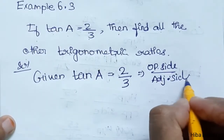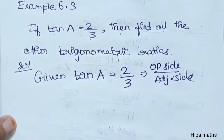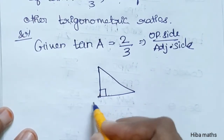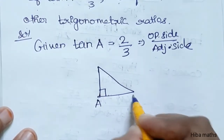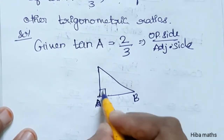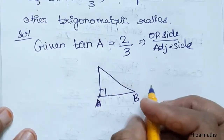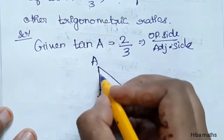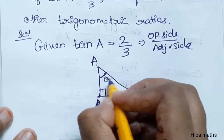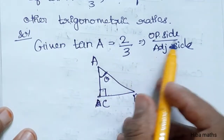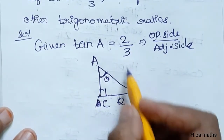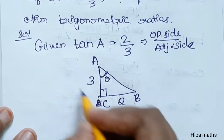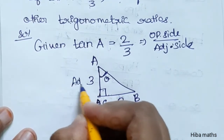Now we have to draw the right triangle. In triangle ABC, angle B is equal to 90 degrees. The opposite side is equal to 2, and the adjacent side is equal to 3.